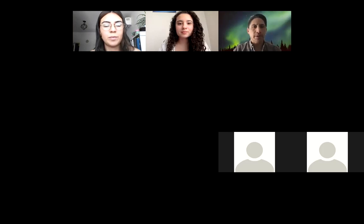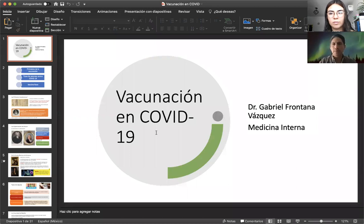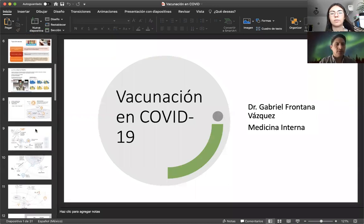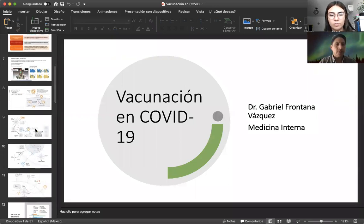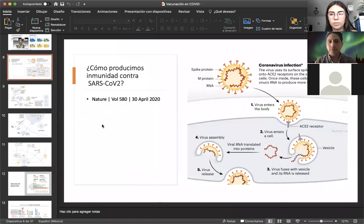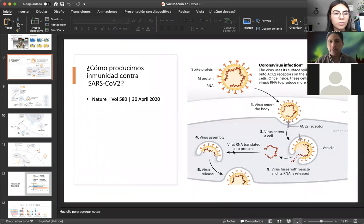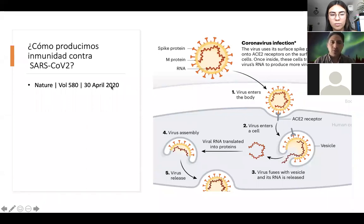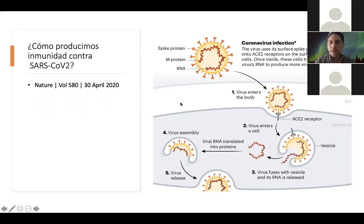Les voy a compartir solamente una pantalla con un esquema general de las vacunas. Sé que vamos a revisar las preguntas, solamente quiero destacarles algunas cosas de ellas que pueden resolver las dudas generales. Son solo dos imágenes. En esta primera, ustedes pueden ver cómo es que producimos nosotros la inmunidad contra el SARS-CoV-2.